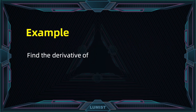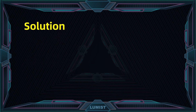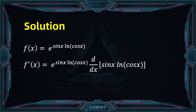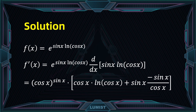For example, consider f of x equals cos(x) to the power of sin(x). To find the derivative, first rewrite the function as e to the power of sin(x) times ln(cos x). Then the derivative f′(x) equals e to the power of (sin x · ln(cos x)) times the derivative of the exponent sin(x) ln(cos x). This gives cos(x) to the power of sin(x) times [cos x · ln(cos x) + sin x · (−sin x / cos x)]. This can also be solved by logarithmic differentiation — the two methods are essentially equivalent.